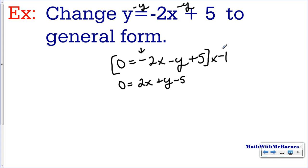Negative 2 times negative 1, positive 2. Negative y times negative 1, positive y. 5 times negative 1 is negative 5. So there it is, there's my general form. If you wanted to put the 0 on the other side you can, but I like to have my 0s on the right-hand side for some reason.